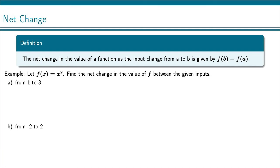One common application of functions is something called net change. The net change of the value of a function as the input changes from a to b is given by f of b minus f of a. This just says what's the output at b and then minus what was the output at a, and that tells us our net change. So let's look at an example.